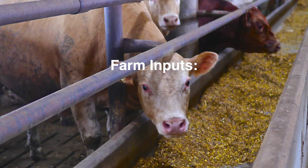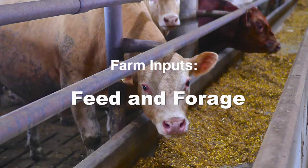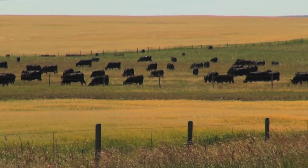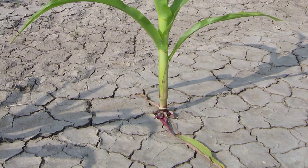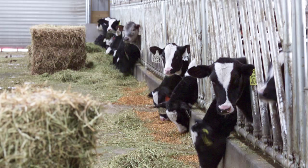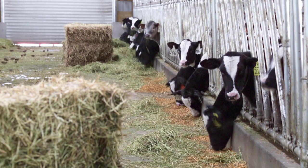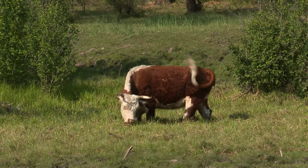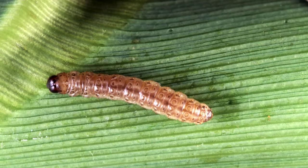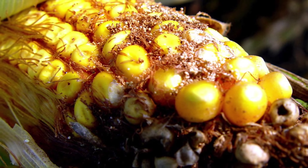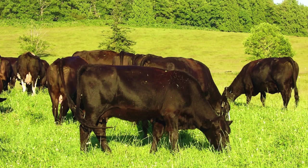The farm inputs most affected by climate impacts are feed and forage. The impacts can be related to seasonal changes in temperature or rainfall, or by extreme events such as drought and flooding. These impacts can affect both the quantity and quality of feed and forage, seen in row crops, forages, or pastures. Climate trends indicate a longer growing season, and pests, weeds, and diseases can also follow temperature and precipitation patterns, negatively impacting feed and forage production.